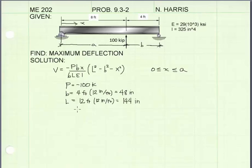b is this dimension here. It's 4 feet and we'll convert that to inches so that our deflection will come out in units of inches. And our length is the total length of the beam, a plus b, which is 12 feet, or in other words 144 inches.